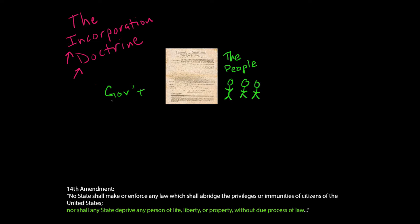Here we have the government, and here comes the government to restrict our rights in some way. Here we are, the people. The government wants to restrict our religious liberty, or restrict our speech, or search our house without a warrant. But thankfully, here's the Bill of Rights — the first ten amendments to the Constitution — protecting us from the government restricting our liberty.